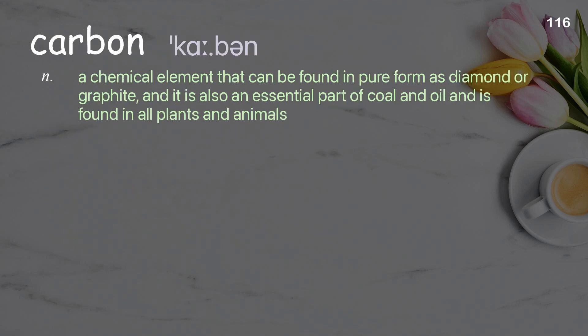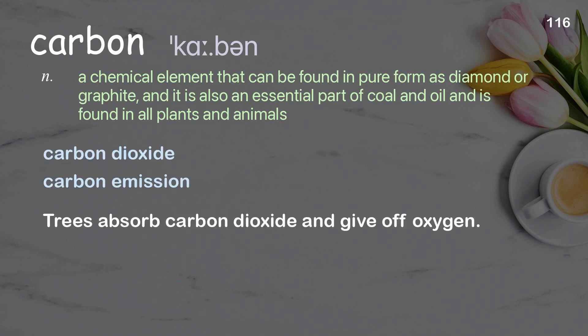Carbon: a chemical element that can be found in pure form as diamond or graphite; it is also an essential part of coal and oil and is found in all plants and animals. Trees absorb carbon dioxide and give off oxygen.